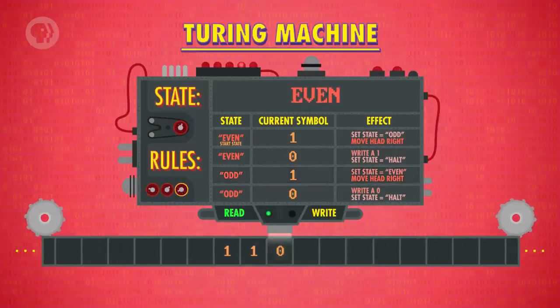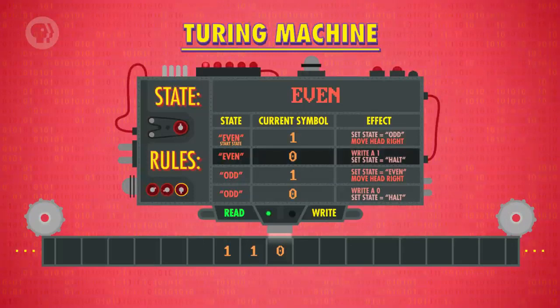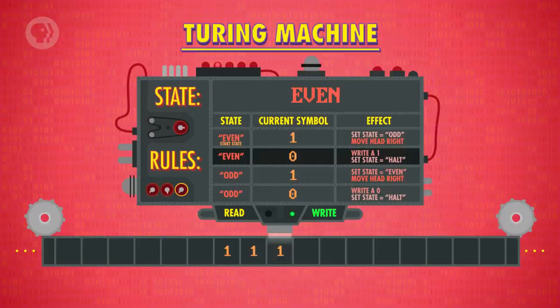Now we see a zero, and our current state is even, so we execute our second rule, which is to write a one to the tape, signifying that yes, it's true, there is an even number of ones. And finally, the machine halts.